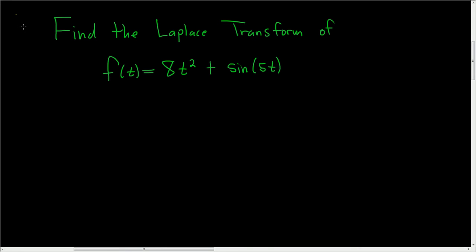Find the Laplace transform of f of t equals 8t squared plus the sine of 5t. In this problem, we need two formulas. The Laplace transform of t to the n is equal to n factorial over s to the n plus 1.